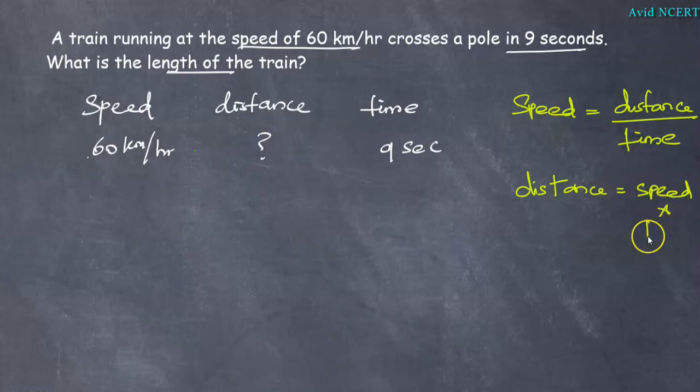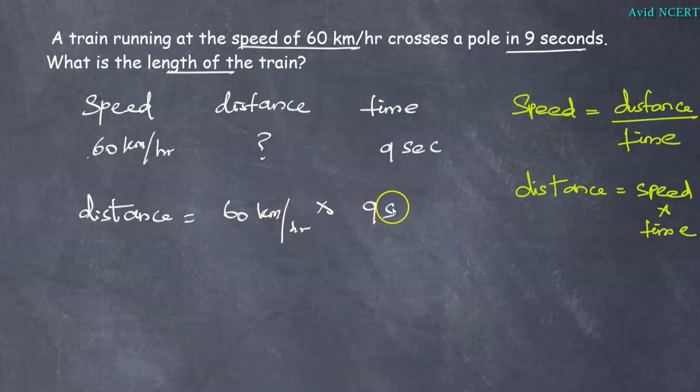Now substitute the values. Distance equals speed, which is 60 kilometers per hour, into time, which is 9 seconds.